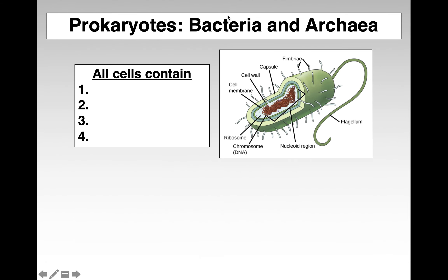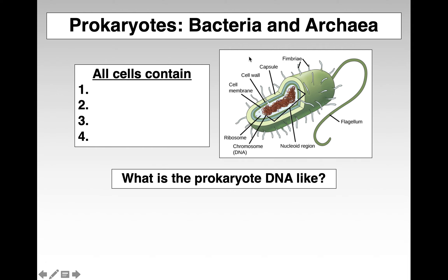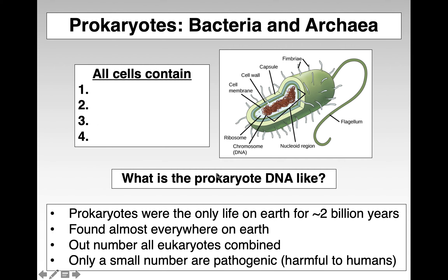Prokaryotes are a characteristic of both the bacteria and the archaea domain. All cells — bacteria, archaea, and eukaryotes — contain a plasma membrane, ribosomes, cytoplasm, and some sort of genetic material. Remember, prokaryotic DNA is a single circle of double-stranded DNA, whereas eukaryotic cells have several linear pieces of double-stranded DNA.